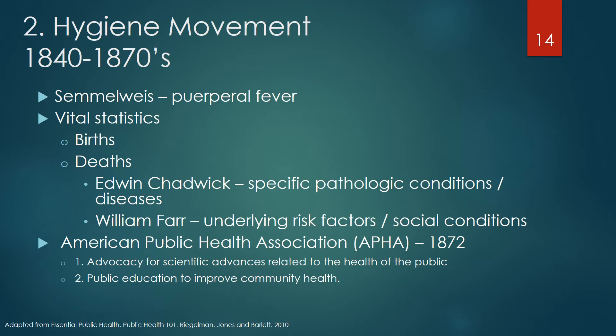Vital statistics of birth and death records were developed in England in the mid-1800s. Vital statistics established a basis for population-wide assessment of health status. From the onset, there was a spirited discussion over how to define the cause of death. Edwin Chadwick argued for specific pathologic conditions or diseases as the causal basis, where William Farr argued for underlying risk factors including social conditions as the real cause of death. The American Public Health Association was formed in 1872 and identified two main goals: advocacy for scientific advances related to the health of the public, and public education to improve community health.